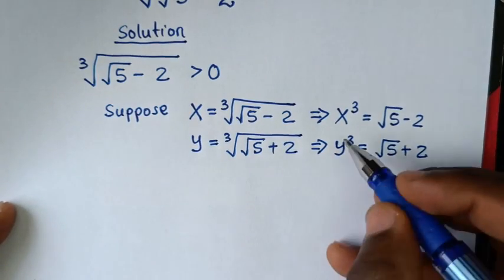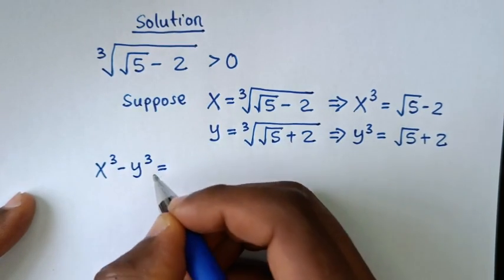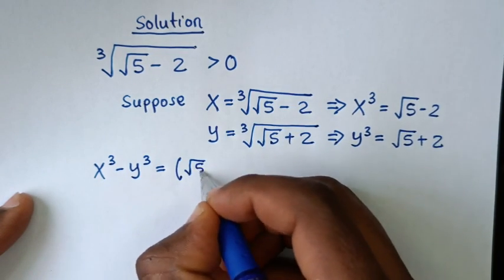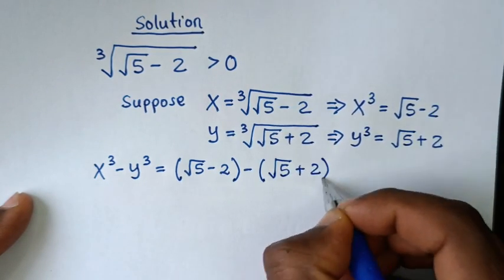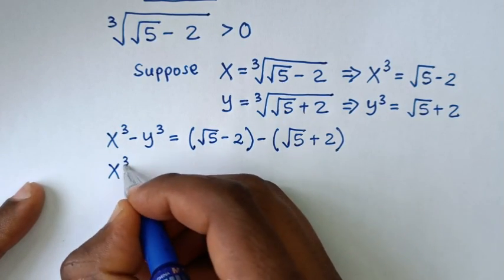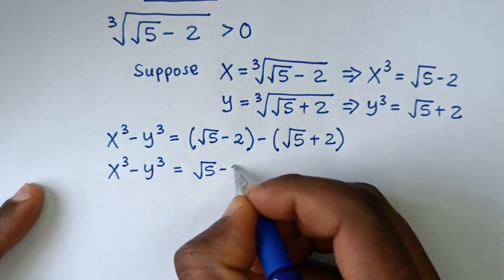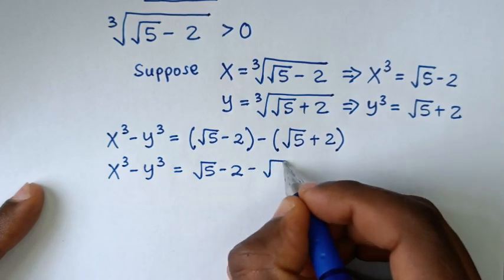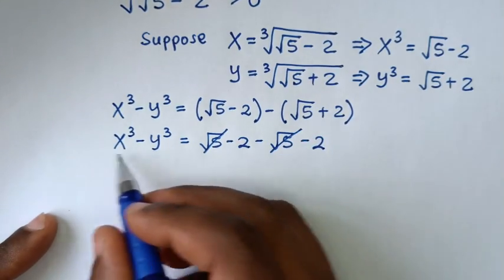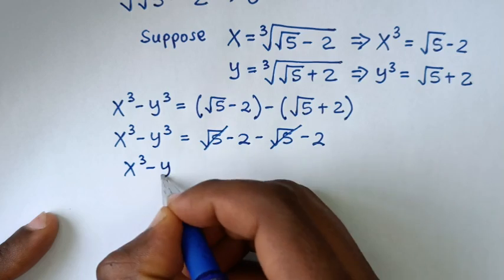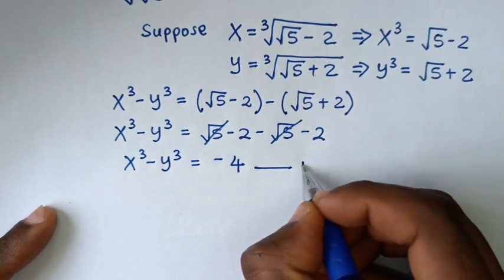Then in the next step, we will take x cubed minus y cubed. So x cubed minus y cubed is equal to (√5 − 2) minus (√5 + 2). Opening the brackets, it will be √5 minus 2 minus √5 minus 2. The √5 terms cancel, leaving minus 2 minus 2, which equals minus 4. Let's call this equation 1.